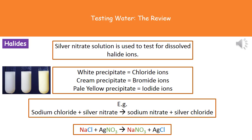The word equation for one of the example reactions is: sodium chloride plus silver nitrate makes sodium nitrate and silver chloride. It's easy to get right because all we need to do is trade the first word of each chemical — sodium chloride becomes silver chloride and silver nitrate becomes sodium nitrate. The symbol equation is NaCl plus AgNO3 makes NaNO3 (sodium nitrate) and AgCl (silver chloride).